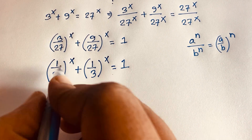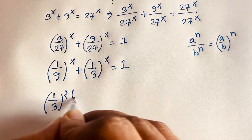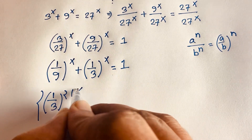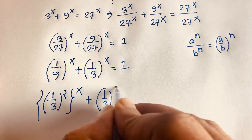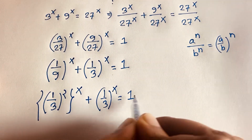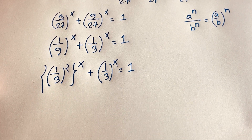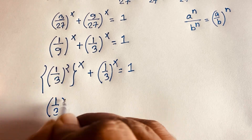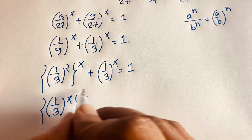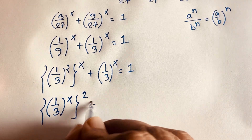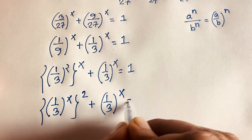Now I rewrite (1/9) as (1/3) squared. So (1/9) to the power x becomes (1/3) to the power 2x. The expression is now (1/3) to the power 2x plus (1/3) to the power x is equal to 1.